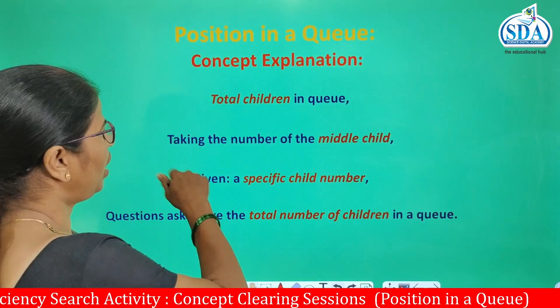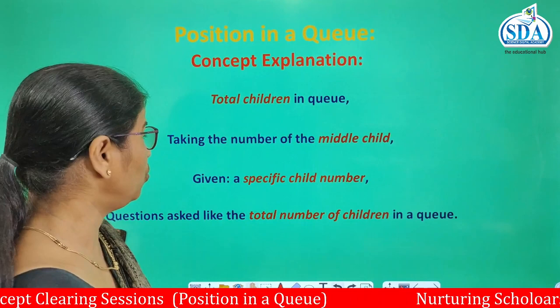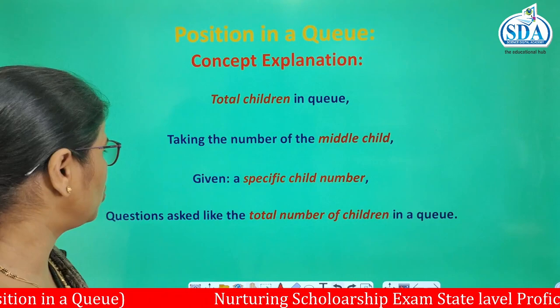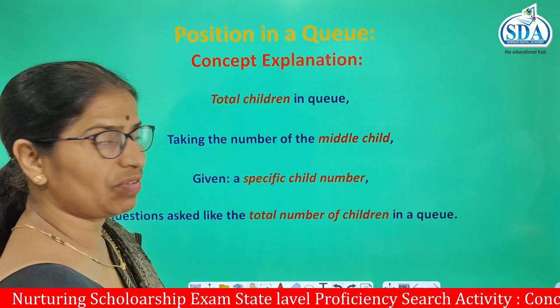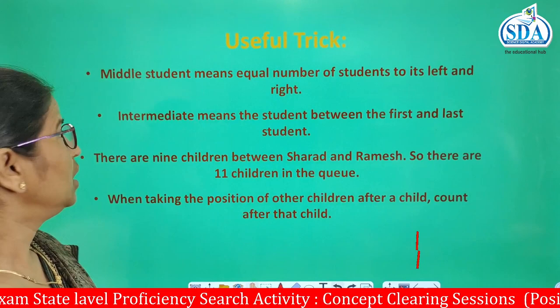We sometimes have to find the total number of children or persons in a queue, taking the number of the middle person or child into consideration. A specific child number is given to us and we have to find the total children in the queue.